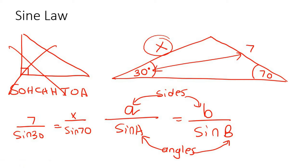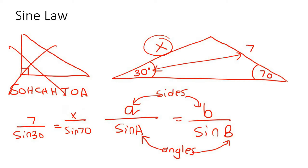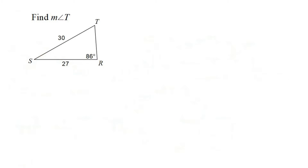And then what we could do — I'm going to do more examples in this video — you could do cross multiplication, and that will help you to find the value of X. That's the basics of the sine rule. So let's go try some of these now. So a over sin A equals to b over sin B.